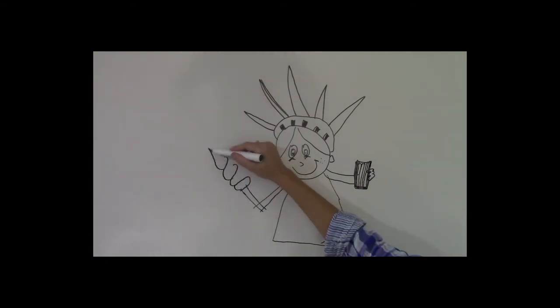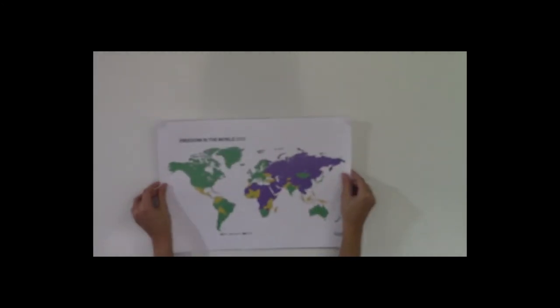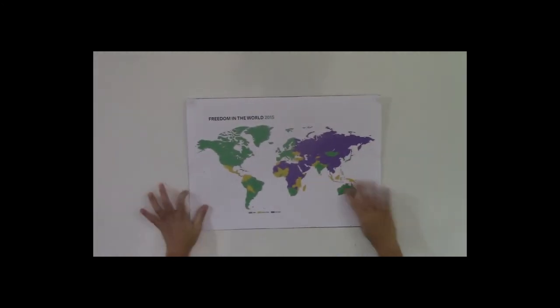So can the Freedom House actually claim that they know what freedom is for everyone? Perhaps the title should read Liberal Democratic Freedom in the World from a Western Perspective. Balthasar thinks he better has a look at the map again.